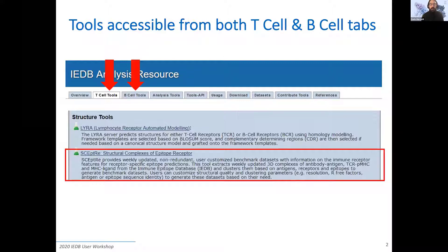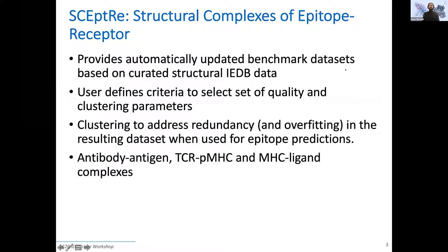Let's start by looking at where they are in the resource page of IEDB. The main idea is that we want to be able to analyze and retrieve 3D structures of these complexes. Even though the complexes or the epitopes for which we have one or more solvent structures are a small minority in comparison to the ones for which we have other experimental data available, those are very important — not only because they provide unique structural information, but also because they are of high value to train novel methods for predicting epitopes and predicting MHC binders.